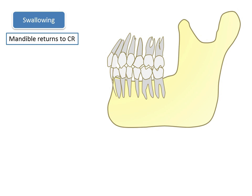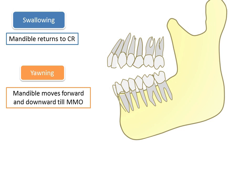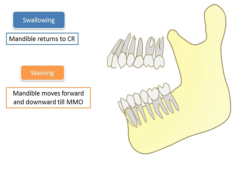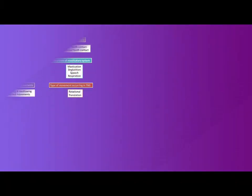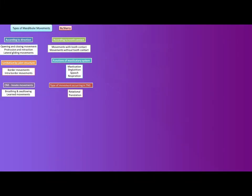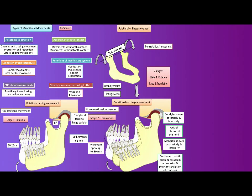While yawning, the mandible may move forward and downward up to the maximum mouth opening position. The condition of the elastic fibers of the temporomandibular ligaments determines the movement of the condyle during yawning. This concludes the discussion on rotational and translational movement of the mandible, the functional intra-border movements of the mandible, and mandibular movement with tooth contacts.